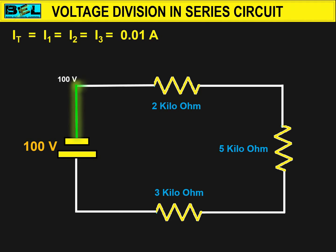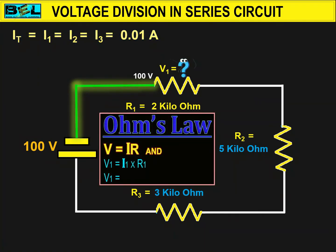Here 100 volts are available at resistor R1. Now we will find out how many volts will be dropped by the R1 resistor with the help of Ohm's law. To find out V1 voltage, we take I1 current from the above equation, that is 0.01 Ampere, and the value of resistor from the circuit, that is 2 Kilo ohms. By multiplying 0.01 Ampere with 2 Kilo ohm resistor, we get 20 volts. So V1 is 20 volts, dropped by R1 resistor.